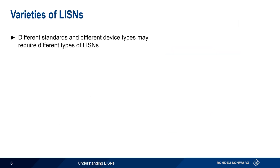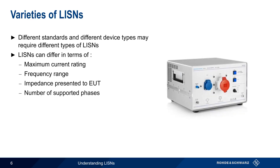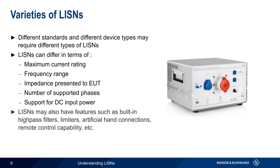Different types of LISNs may be required depending on the test standard and the equipment under test. For example, LISNs may differ in terms of their maximum current rating, frequency range, and the impedance they present to the EUT. Some LISNs support different numbers of phases, such as the one shown here, or may support DC input power. In addition to differences in basic specifications, some LISNs have additional features such as high-pass filters, limiters, remote control capability, etc.